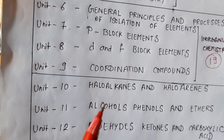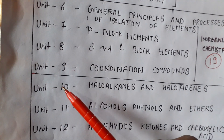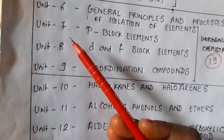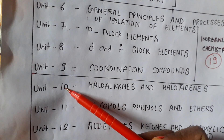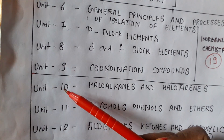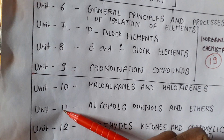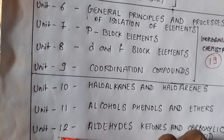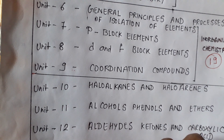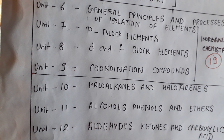In part 2, the units are: unit 10, unit 11, unit 12, unit 13, unit 14, unit 15, and unit 16.